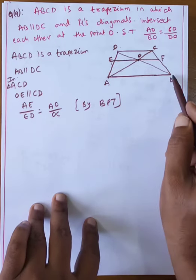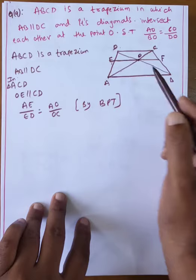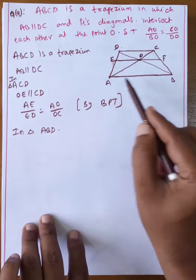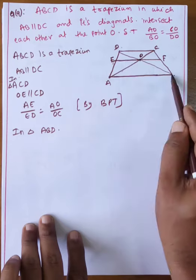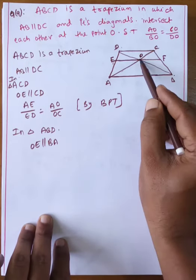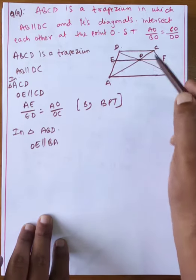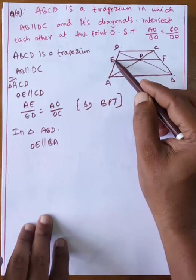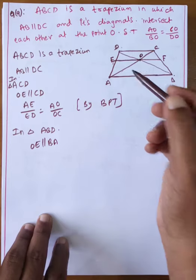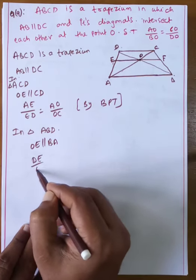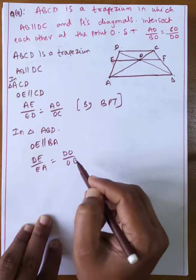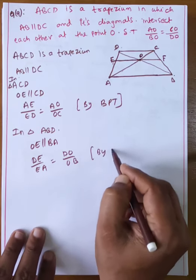In triangle ABD, OE is parallel to BA. By BPT, DE by EA equals DO by OB. Taking reciprocal, AE by ED equals OB by OD. This is equation number two.